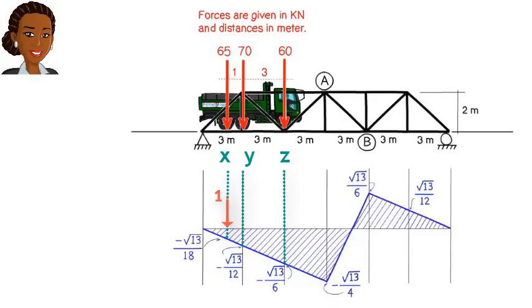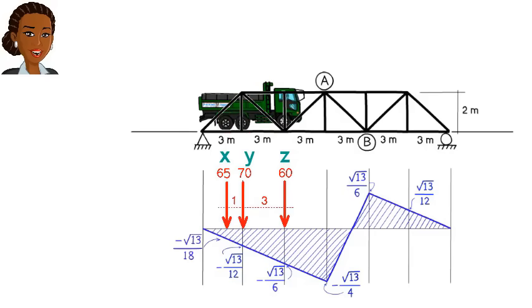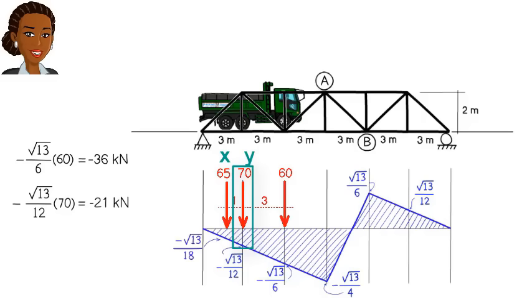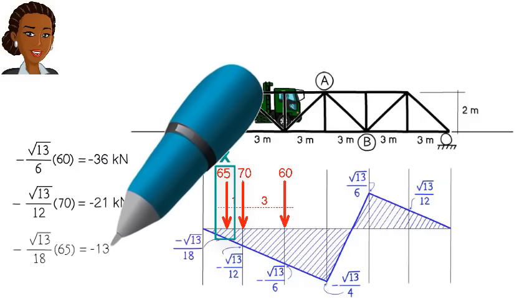This value means that if we place a unit load at z, the resulting axial force in member AB would be this. And if the unit load is placed at x, we get this for the axial force in AB. But what if, instead of a unit load, we place a load of 60 kilonewtons at z? What would be the resulting axial force in AB? We can determine the resulting force by multiplying 60 by negative square root of 13 over 6. This gives us negative 36 kilonewtons. And what would be the resulting axial force if we placed a load of 70 kilonewtons at y? It would be negative 21 kilonewtons. Further, if we placed a load of 65 kilonewtons at x, the axial force in AB would become negative 13 kilonewtons.